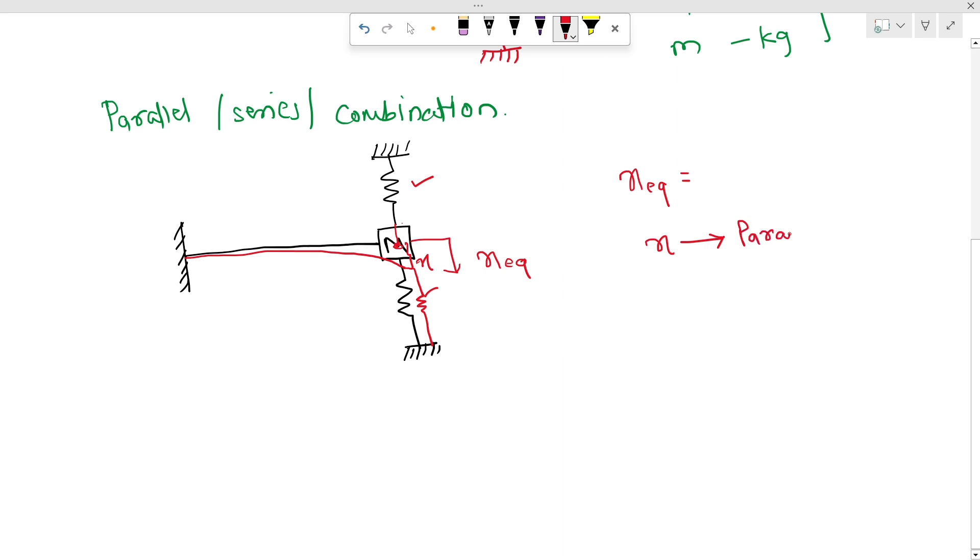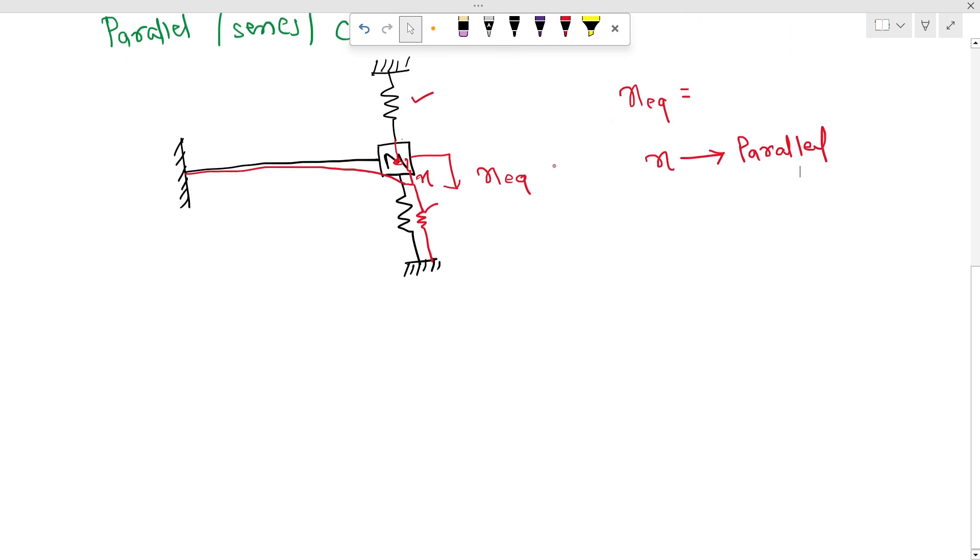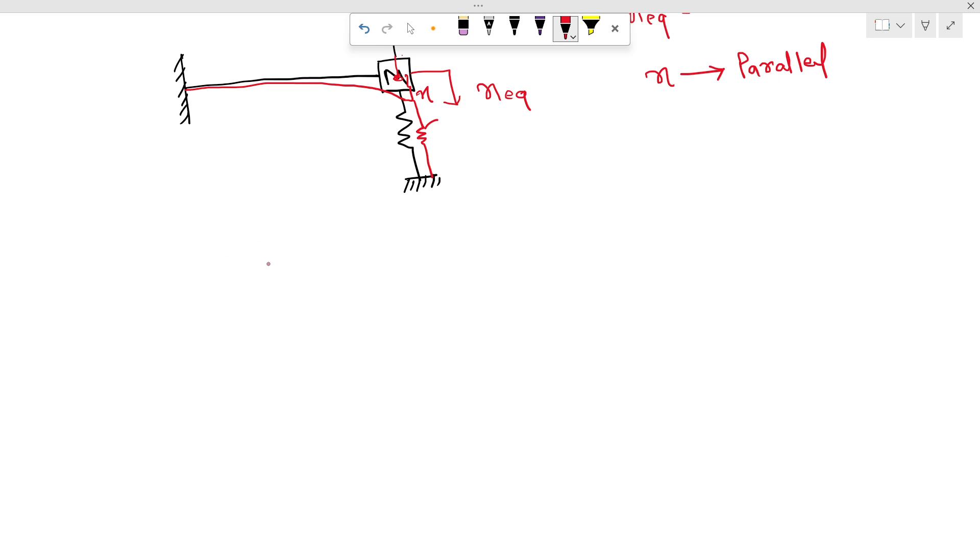So I can write K equivalent equals cantilever beam stiffness plus stiffness of the upper spring plus stiffness of the lower spring. That means Kb plus 2K.